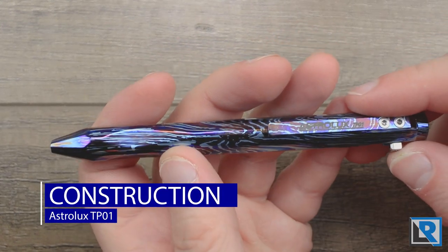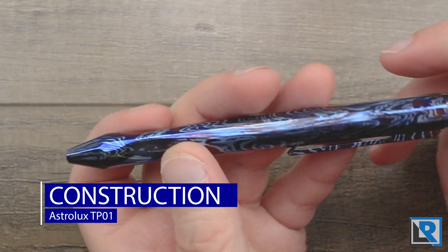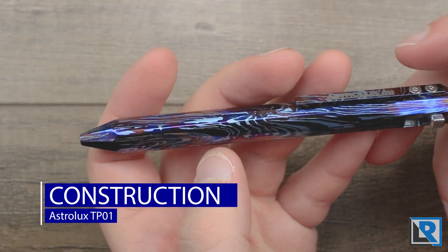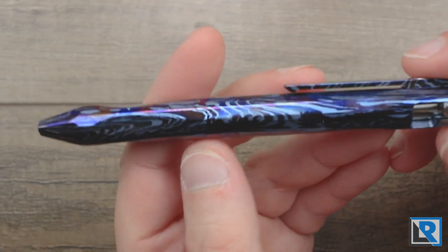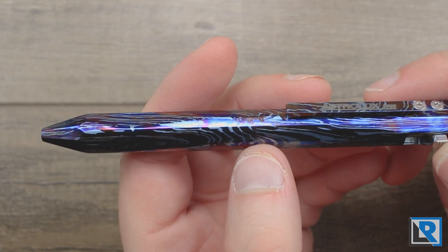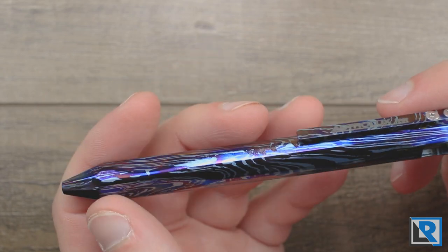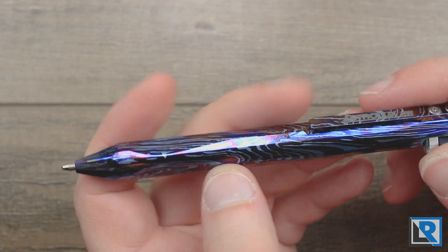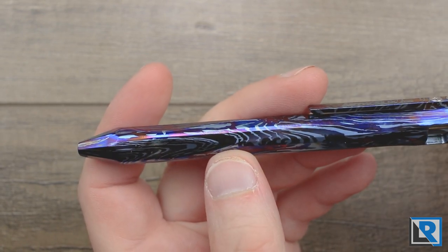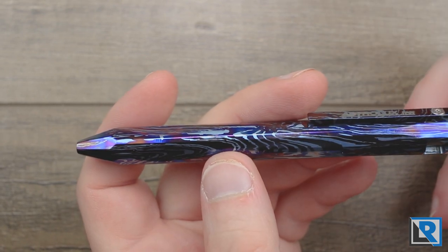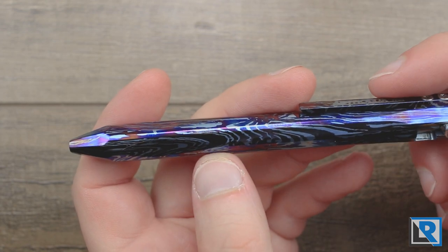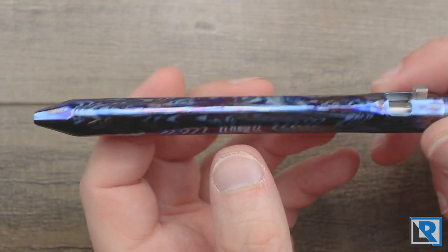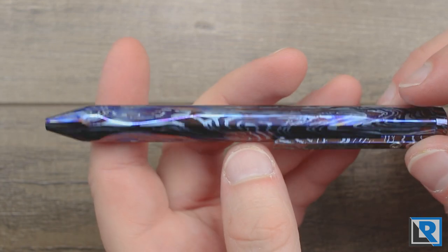Let's talk about construction. The TP01 pen comes in three different material choices as I mentioned. The one I have is anodized titanium in what they're calling the wave pattern, but it's also available in stainless steel and anodized aluminum in a couple colors. Titanium is available in raw machine polished and then two colors as well. This is the wave pattern and I just love this.